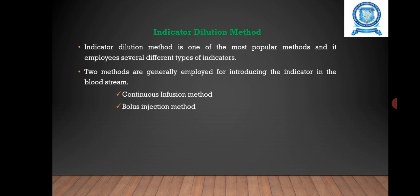The next method is Indicator dilution method. In this method, it is one of the most popular methods and employs several different types of indicators. Here you have two methods: The first one is continuous infusion method, but it's not widely used due to the indicator recirculation process.